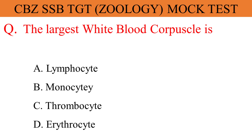The largest white blood corpuscle is: The given options are A. Lymphocyte, B. Monocyte, C. Thrombocyte, D. Erythrocyte. And the correct answer is option B. Monocyte.